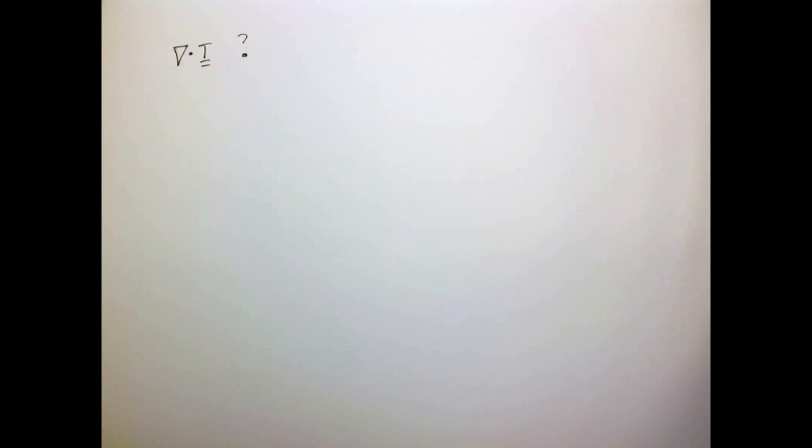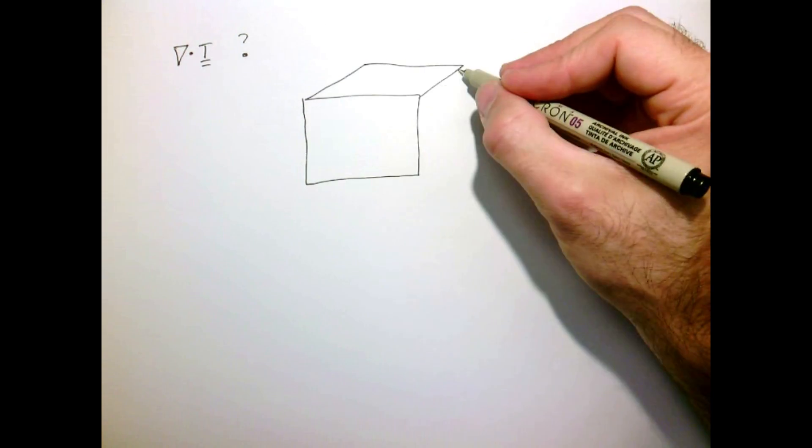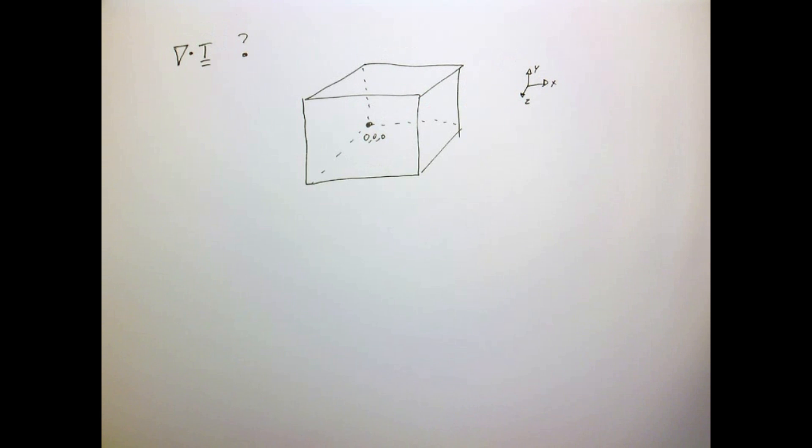Let's see if we can prescribe some physical meaning to the divergence of the stress tensor. So let's go back to our cube. So there's our cube in x, y, z. I'm gonna place the origin of this cube at the back corner there.